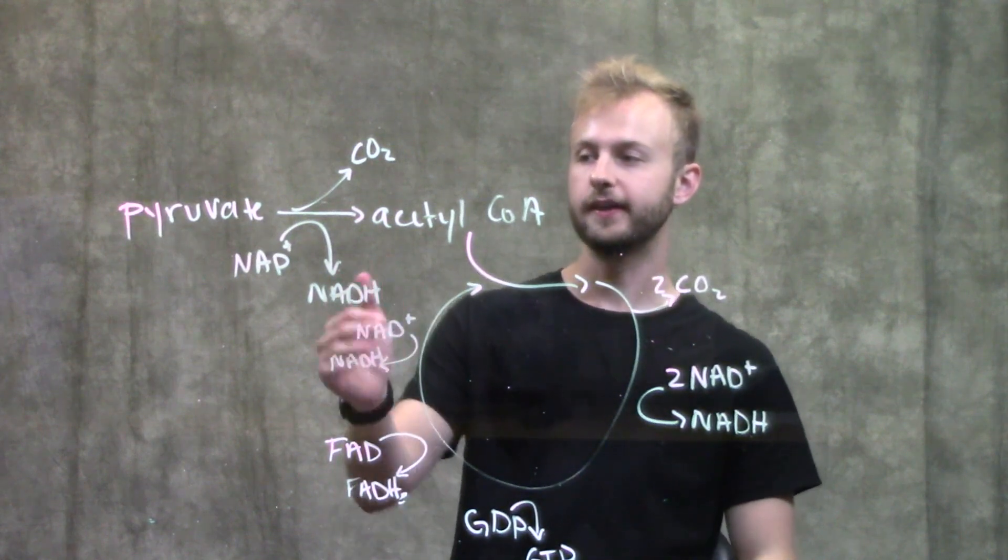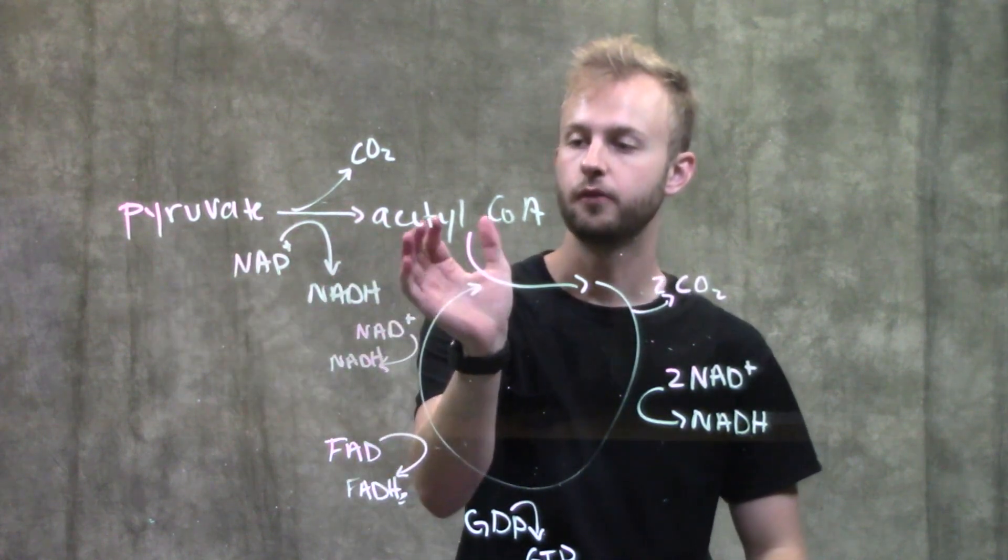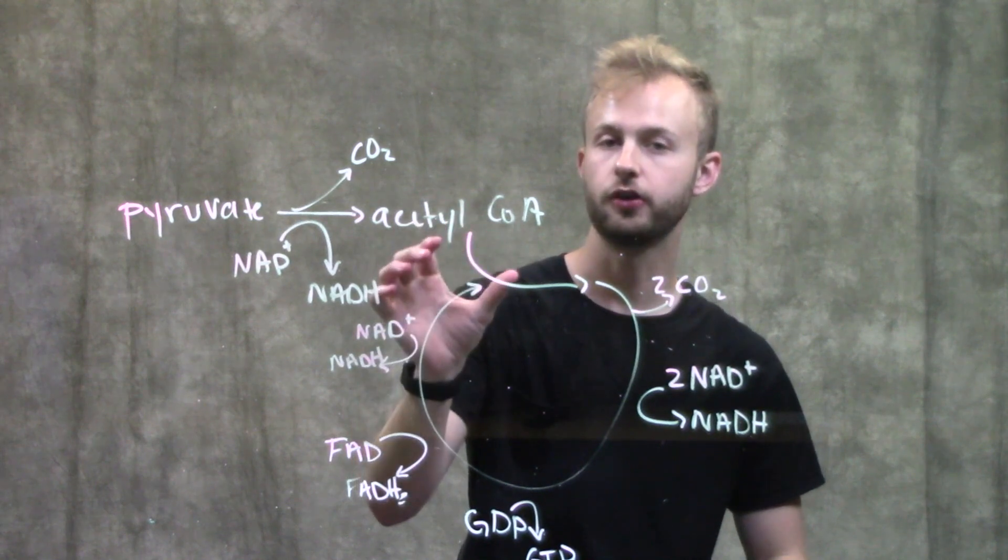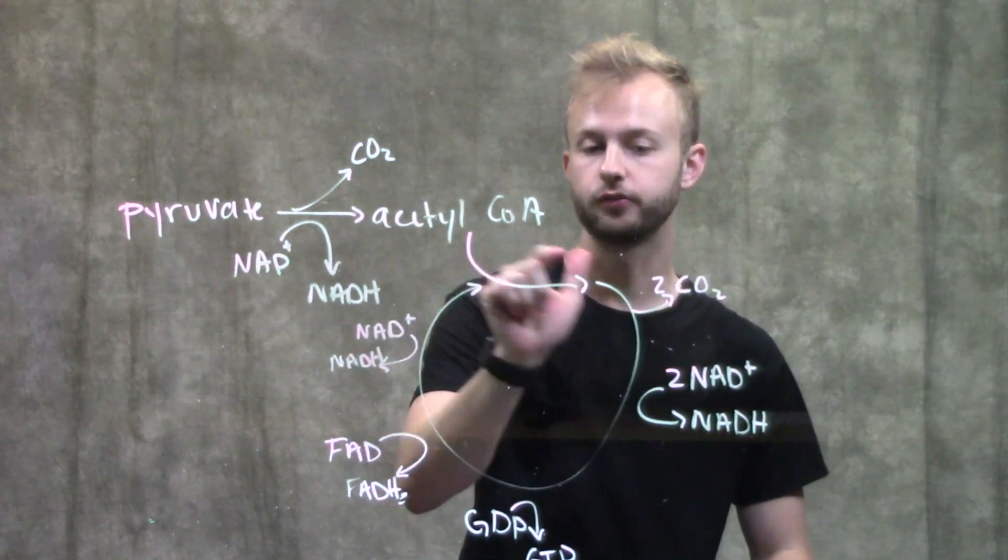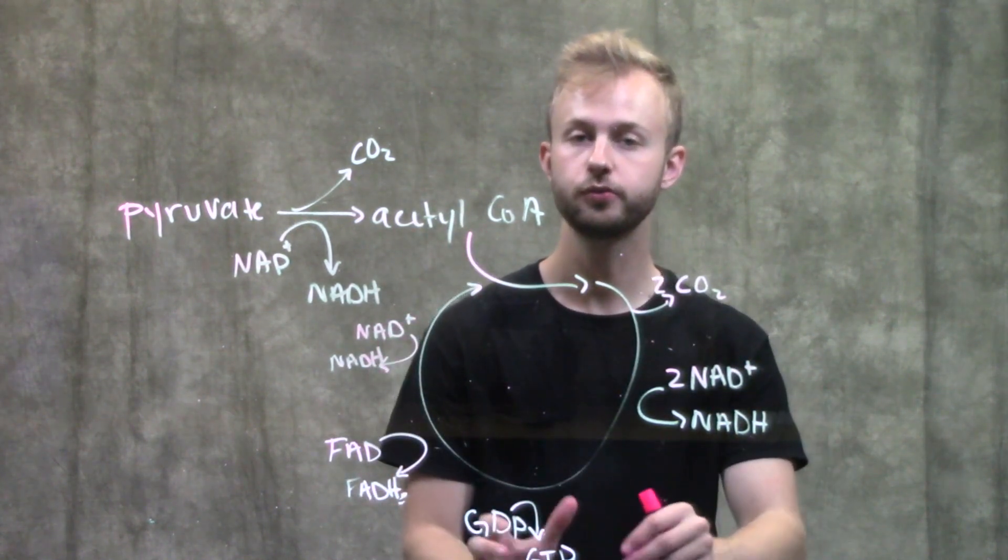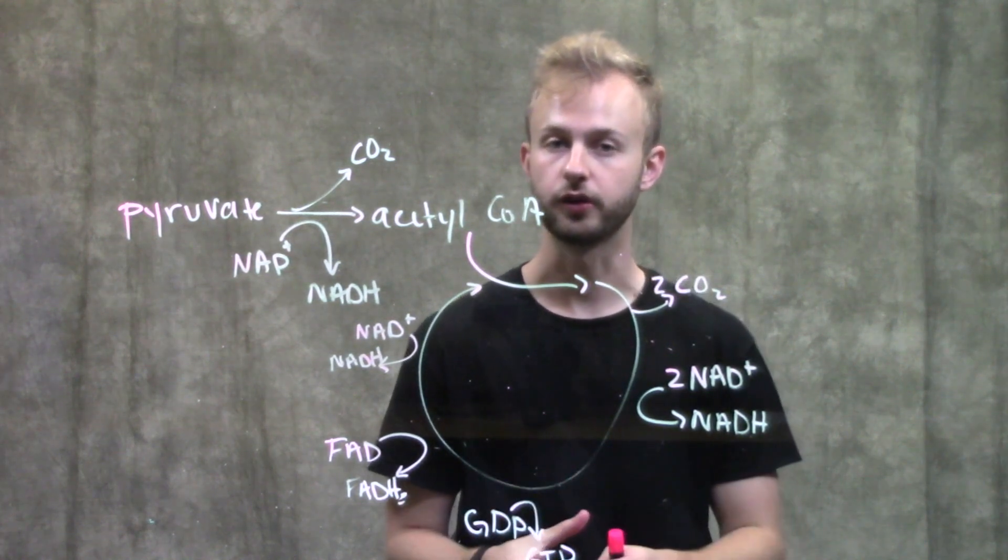And so again, just like with the pyruvate oxidation, when we oxidize pyruvate, we make two acetyl-CoAs. So you'll have to go through this cycle twice and multiply everything by two to figure out how much you would get from one molecule of glucose.